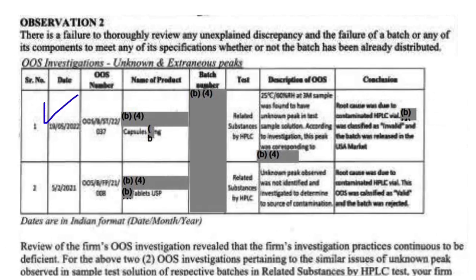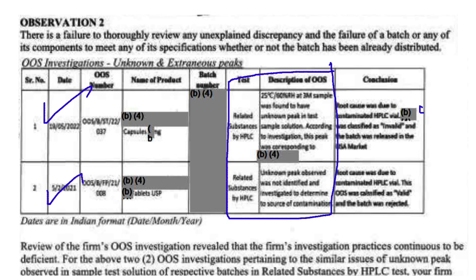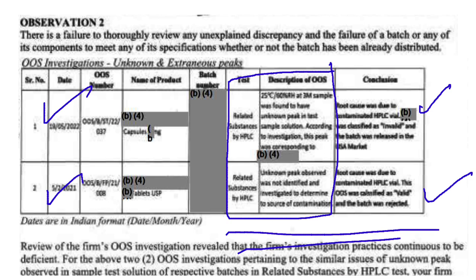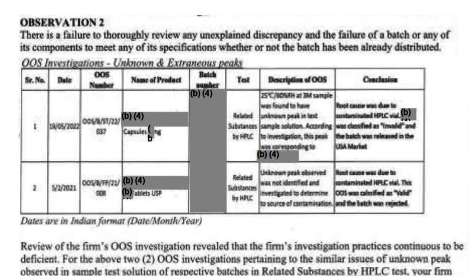Two OOS investigations reviewed by auditors during the inspection were logged for the related substances test, where unknown impurity results were observed out of specification. The root cause for these OOS was concluded as contamination of the HPLC vial, but there was no scientific rationale or justification provided for how the vials were contaminated.